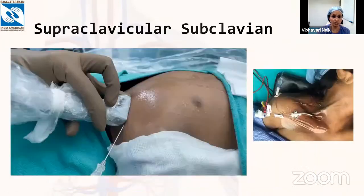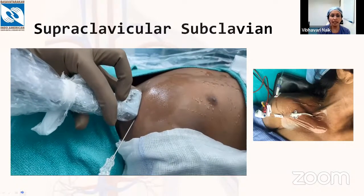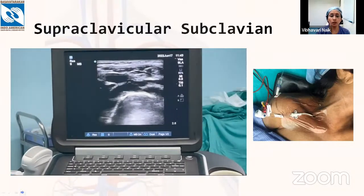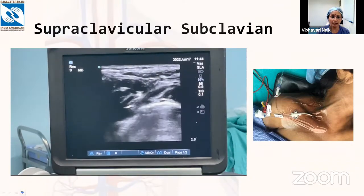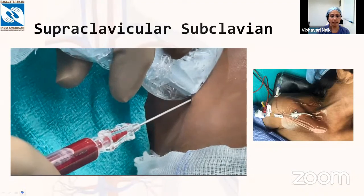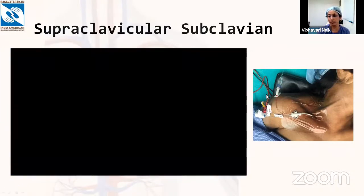For subclavian venous access: the infraclavicular approach involves identifying the subclavian artery and vein under ultrasound, then performing an ultrasound-guided puncture — though rib shadows can hamper visualization. The supraclavicular approach positions the probe over the clavicle tilted toward the patient's feet; the inline needle approaches through the subclavian into the brachiocephalic vein and guide wire is traced. This approach can be done either posteriorly above or inferiorly below the clavicle — the infraclavicular approach is preferred for patient comfort.